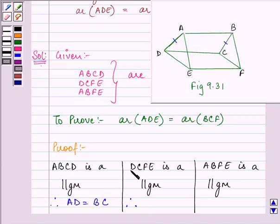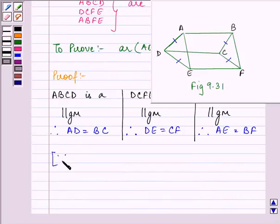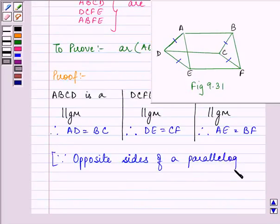Similarly, here DCFE is a parallelogram, so we can say that DE is equal to CF, and here we can say that AE is equal to BF. And giving the reason for all, because opposite sides of a parallelogram are equal and parallel to each other.